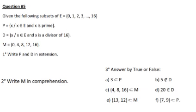In question number 5, we are given the following E, which is 0, 1, 2, 3 to 16. It's the universal set. We have P, D, M, subsets of E. We have P, which is a prime number. D, which is a divisor of 16. M is 0, 4, 8, 12, and 16.